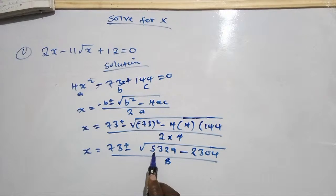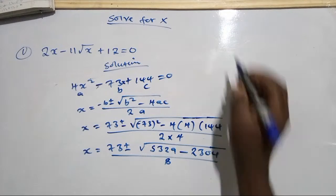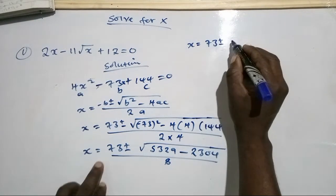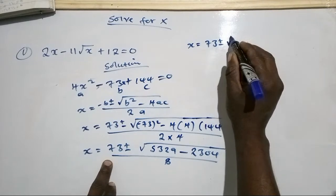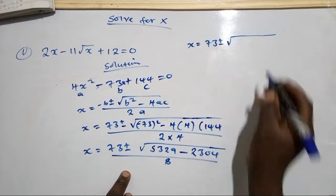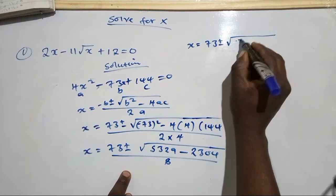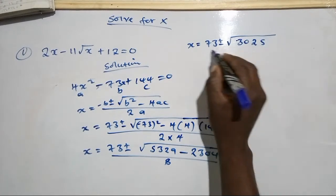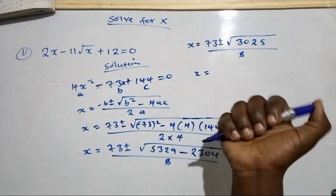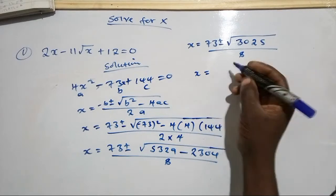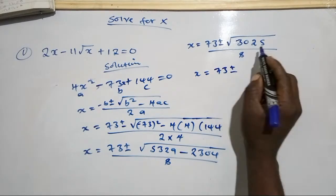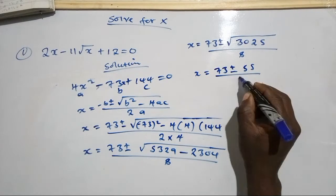So x equals 73 plus or minus the square root of 5329 minus 2304, divided by 8. That gives 5329 minus 2304 equals 3025. The square root of 3025 is 55. So x equals 73 plus or minus 55, divided by 8.